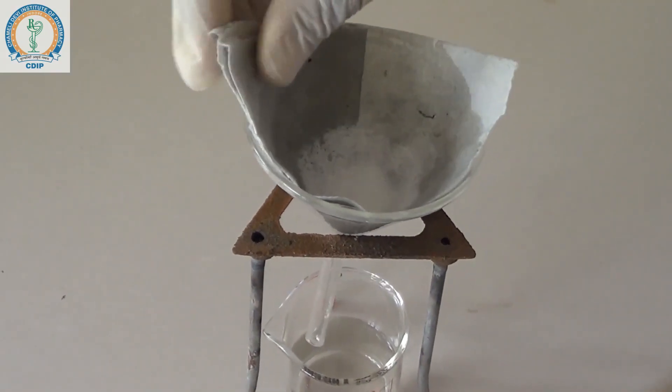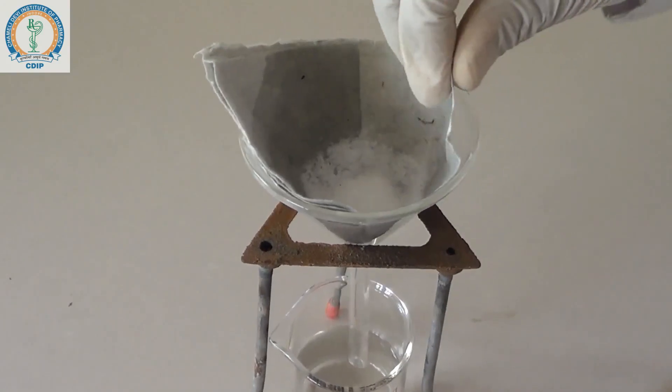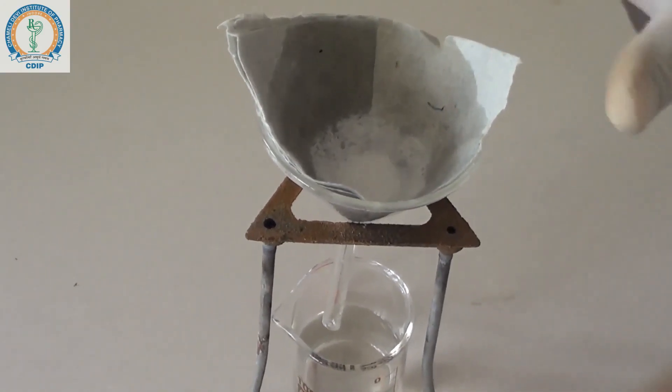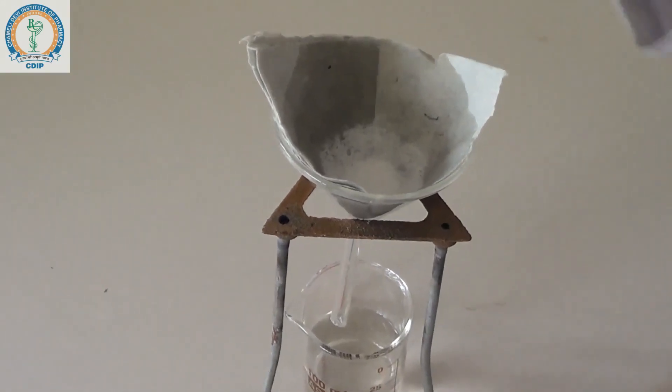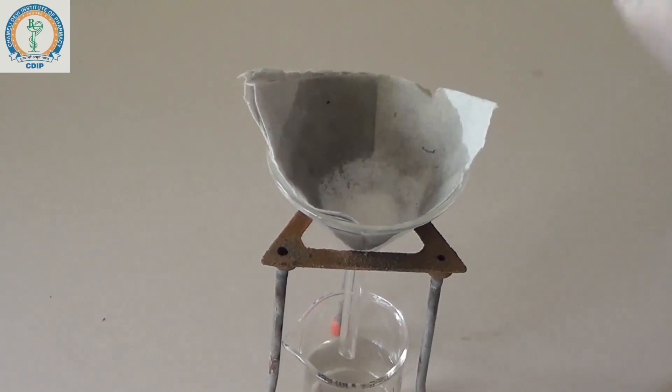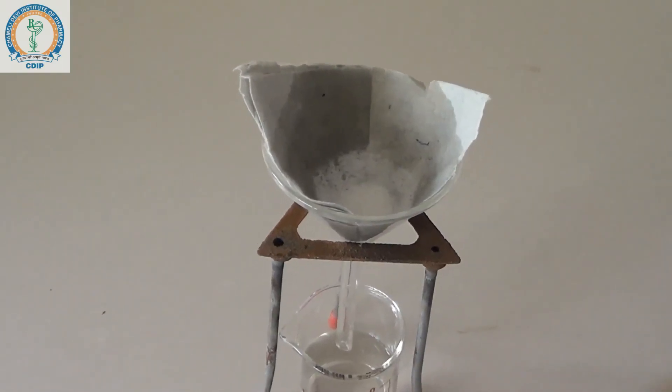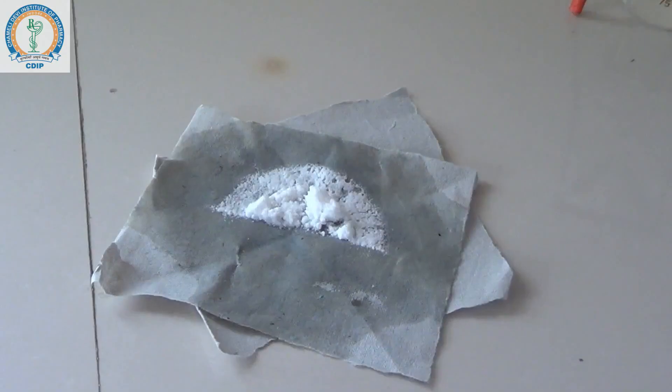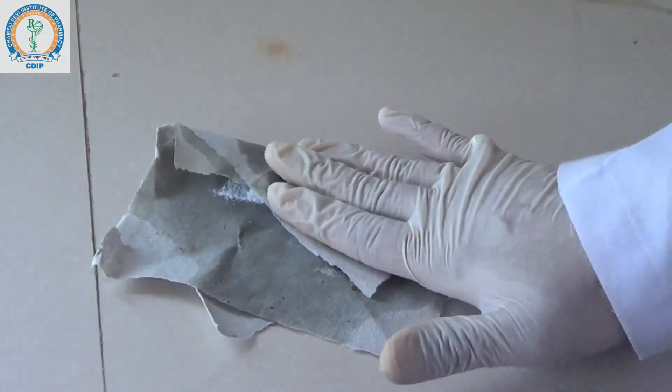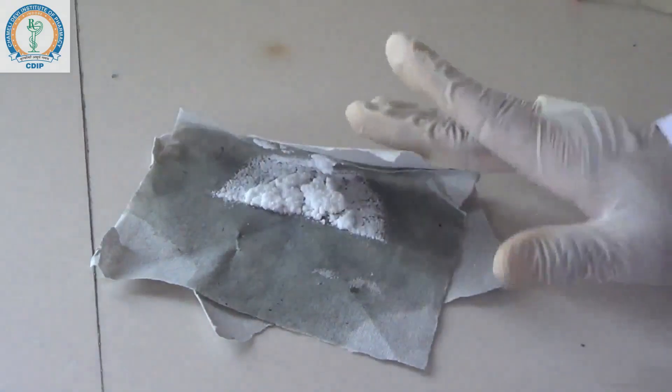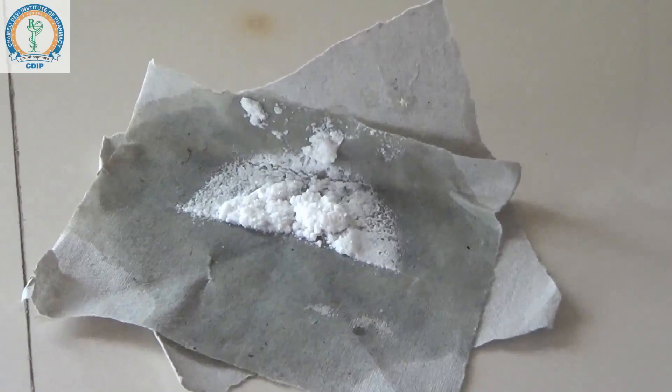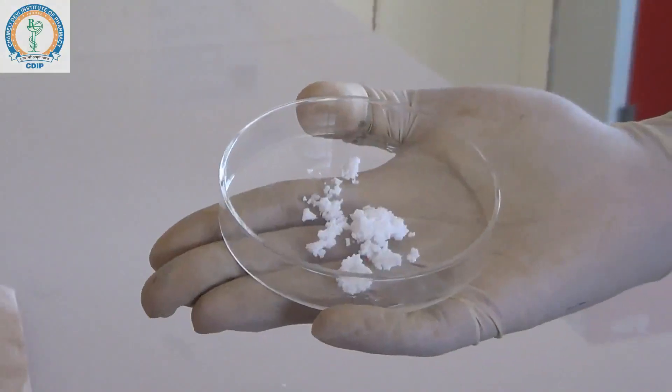Now this is the product of benzamide, and it was washed with water. Now we need to dry it in the folds of the filter paper. You need to dry it and then go for air drying. Now this is the final product which needs to be dried with the filter paper. This is the final product.